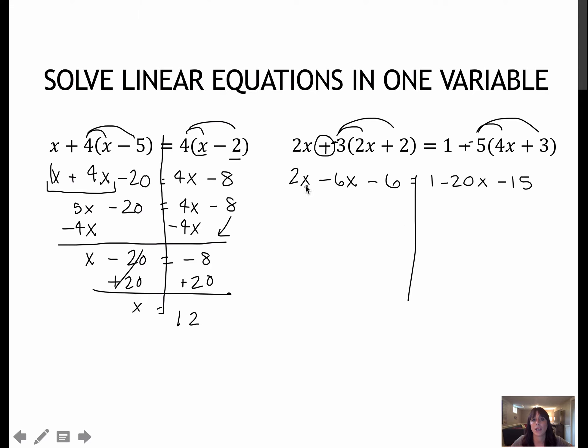And now, again, I'm going to combine like terms on the left. So 2x and minus 6x gives me negative 4x. So notice I did a keep flip change there as well. On the right side, the 1 and the minus 15 are like terms, and so those combine to negative 14. So now that I have an x value and a constant on each side, I'm going to choose to add the 20x to each side because, again, I like to deal with positive values.